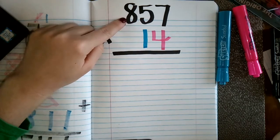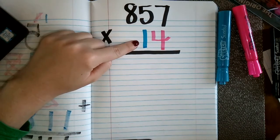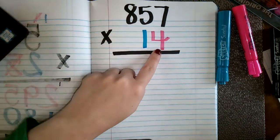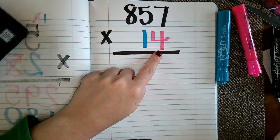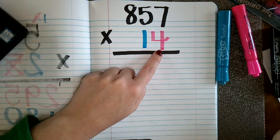So with my larger number on top and my smaller number on bottom, we are ready to start. And so again, we always want to start with our smallest place value, which in this case happens to be the four that's in the ones place.